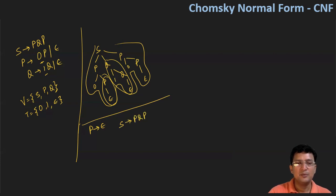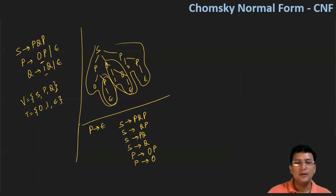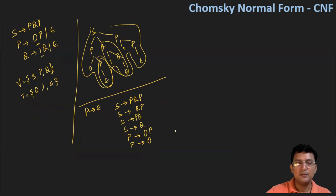So S produces PQP. Here we need to substitute epsilon in place of P. First, if we put epsilon in place of the first P, we get QP. If we put epsilon in place of the second P, we get PQ. And if we put epsilon in both places, we get S produces Q. We also have P produces zero P — we keep that, and adding epsilon gives P produces zero. Then we have two more productions.